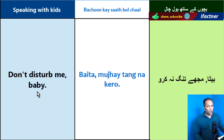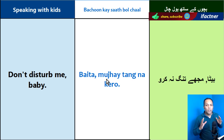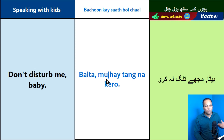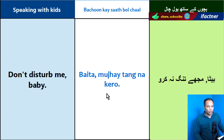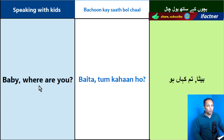Don't disturb me, baby. Baita, mujhay tang na karo. Baita means 'baby.' Usually Baita means 'son' and Baiti means 'daughter,' but out of love we also say Baita to a baby girl. Mujhay means 'me,' tang means 'disturb,' na means 'not,' karo means 'do.' Baita, mujhay tang na karo — Don't disturb me, baby.